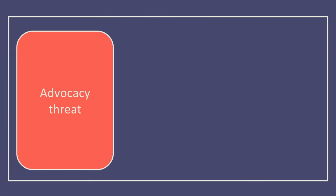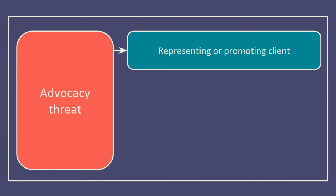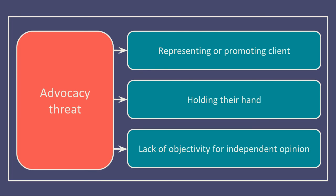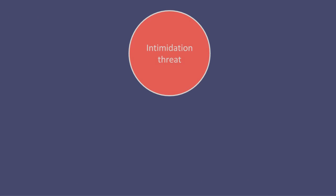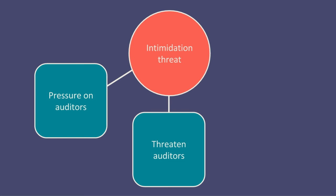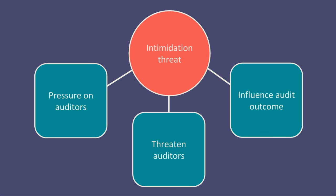Advocacy threat is where the auditors could be representing or promoting the client. This could be seen as holding their hand and lacking the objectivity needed to form an independent opinion. Finally, intimidation threat is where the client may put pressure on the auditors to threaten them in order to influence the outcome of the audit.